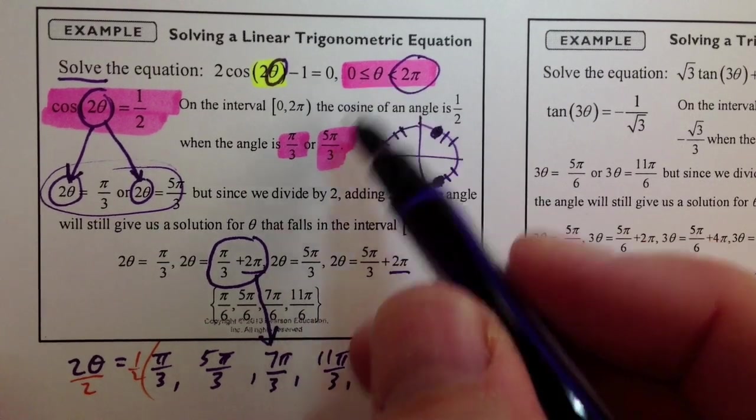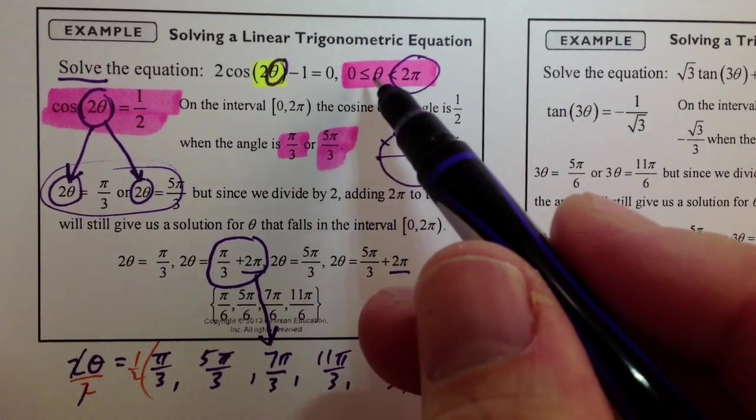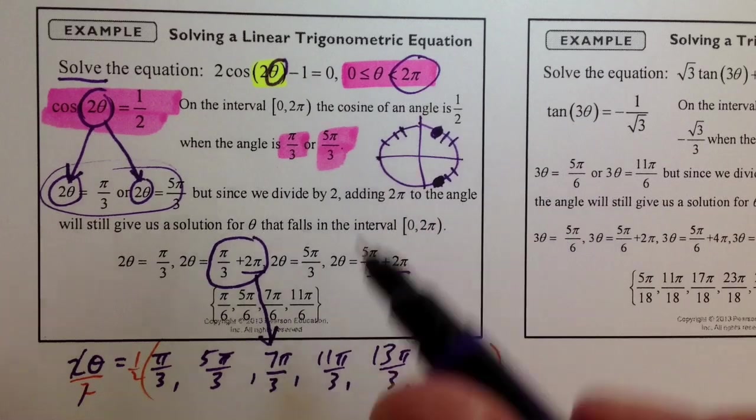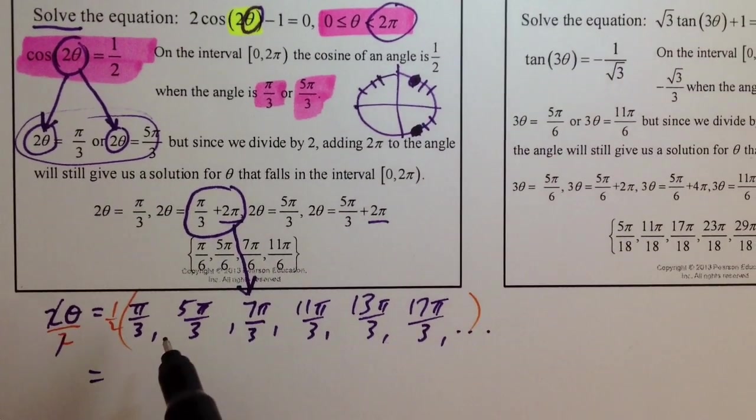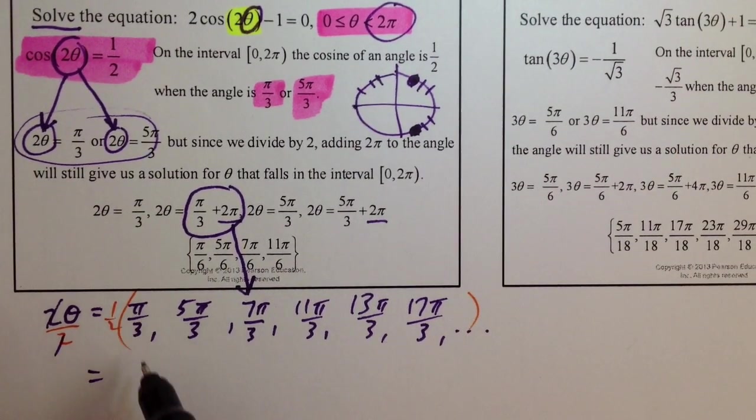And we just have to keep listing them until we get past 2 pi. Because, remember, we're only allowed to find theta angles, angles of theta, that will be between 0 and 2 pi. So, let's start listing them. We've got 1 half times pi over 3, that's pi over 6.